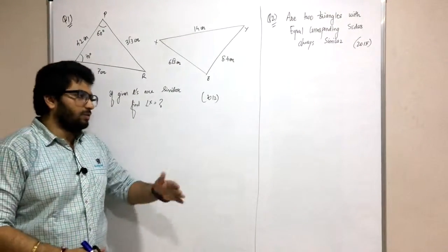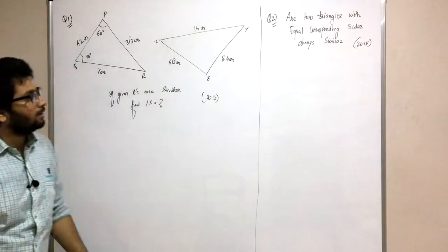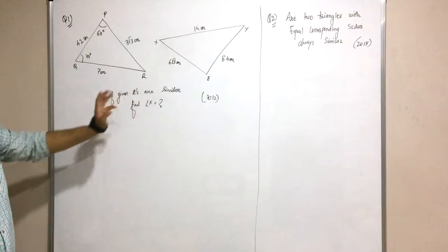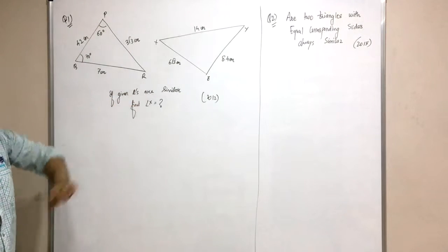So here we have some questions based on the part that we have covered. Let's see the first question. In the given triangles, if the given triangles are similar, you have to find out the unknown angle.